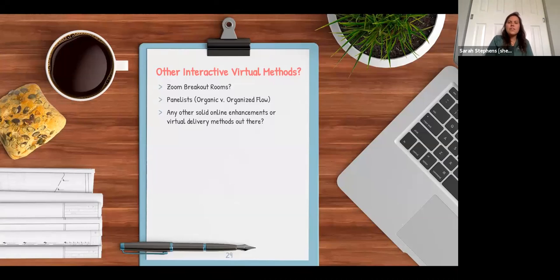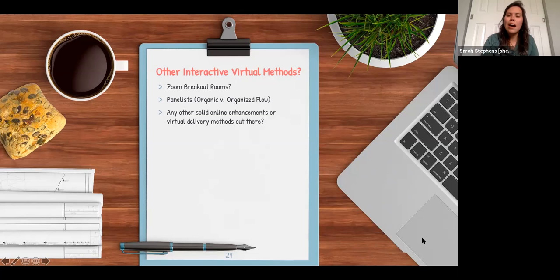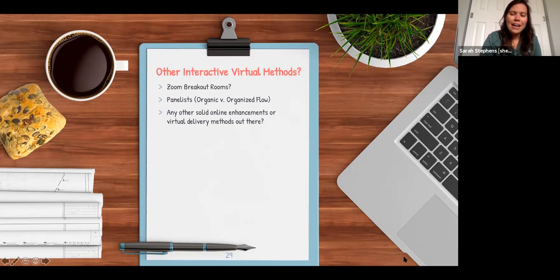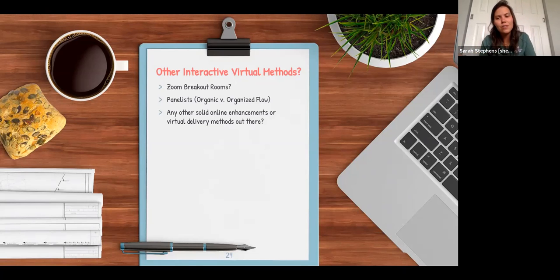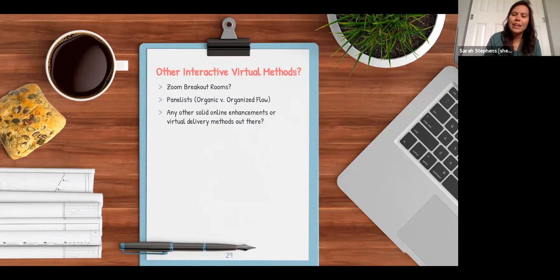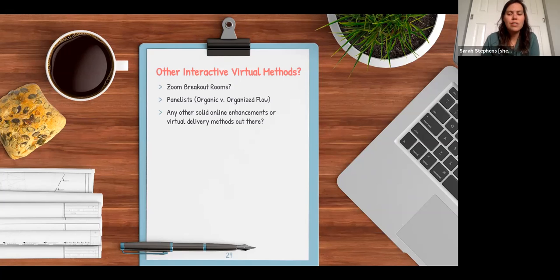Some other virtual methods to consider: Zoom breakout rooms, and panelists to bring in other voices. If you have panelists, don't go in the same order every time — the person who always starts has the best answer, and by the fourth person they feel rather defeated. An organic flow to panelists is much better than being too organized, and it's more equitable to the people on the panel.